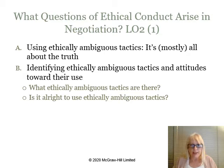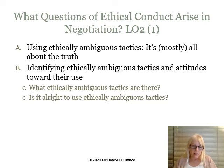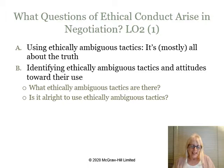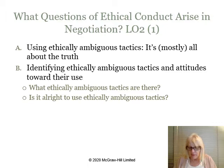Learning Objective 2: What questions of ethical conduct arise in negotiation? Firstly, ethically ambiguous tactics, which are mostly about the truth. Ethically ambiguous tactics may or may not be improper depending on an individual's ethical reasoning and circumstances. The focus is on what negotiators say or what they say they will do, rather than what they actually do. Arriving at a clear, precise, effective negotiated agreement depends on the willingness of parties to share accurate information about preferences, priorities, and interests. At the same time, negotiators seek maximum self-interest and may not disclose certain information, giving rise to the fundamental negotiator's dilemma involving trust and honesty. Sustaining the bargaining relationship means choosing a middle course between complete openness and complete deception.